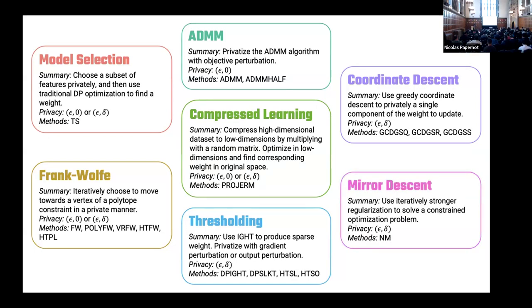Finally, we have mirror descent. This is also a fairly new optimization framework in which you can use iteratively stronger regularization to solve a constrained optimization problem. Before I move on, there are two sorts of methods I really want to highlight. The first are heavy-tailed methods. You can see that some of these methods start with HT. Unlike all the other optimization methods highlighted on this slide, these methods don't require you to bound the norm of your input dataset. They use robust gradient estimation to ensure that the gradient they're updating with is clipped. And another important class of methods are all the coordinate descent methods in which you don't need to compress the entire dataset's norm, you just need to compress the norm of your features. This is going to be important in a few slides.